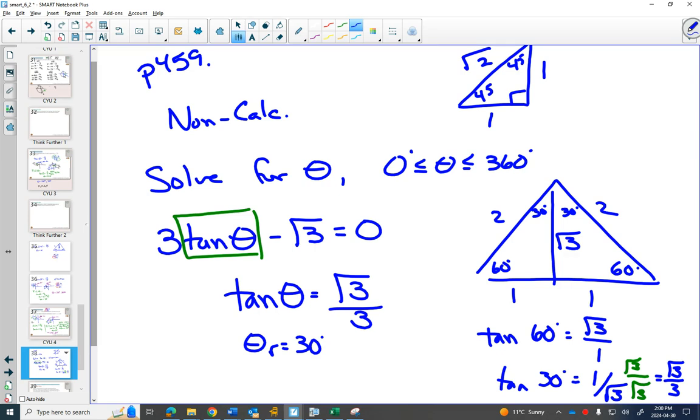Now that you have your reference angle of 30 degrees, according to the CAST rule, where are we going to look for this one? Tan is positive. So we'll look in quadrant 1, where they're all positive, and in quadrant 3.